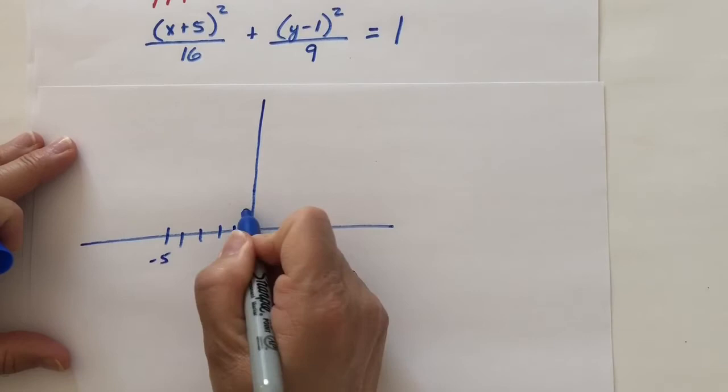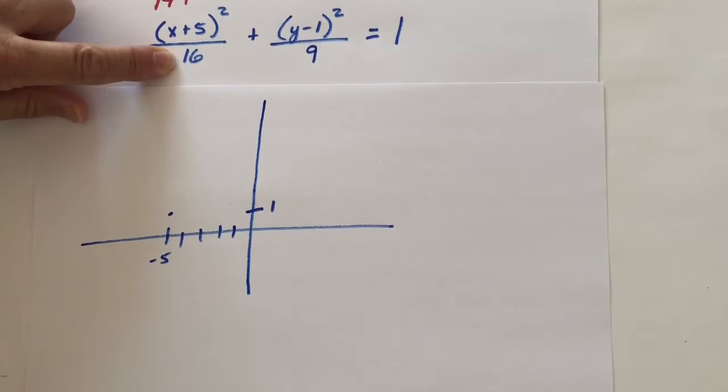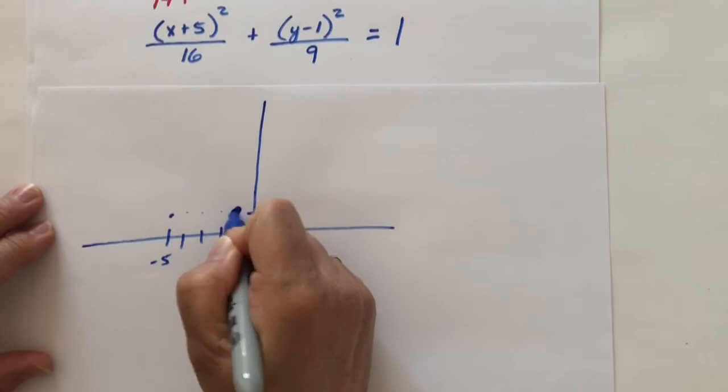And under the x, it will tell me how far to go in the x direction. Remember, you're going to take the square root of this number. So from here, from center, I will go 4 in each direction. 1, 2, 3, 4. That puts 1 vertex of my ellipse here.